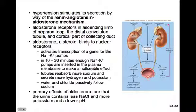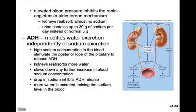The primary effects of aldosterone are that urine will contain less sodium chloride and more potassium, and it will have a lower pH — be more acidic. Elevated blood pressure inhibits the renin-angiotensin-aldosterone mechanism, in which case the kidneys reabsorb almost no sodium, and urine contains 30 grams of sodium per day instead of the normal 5 grams. We can get rid of sodium in urine if we have aldosterone to regulate that.